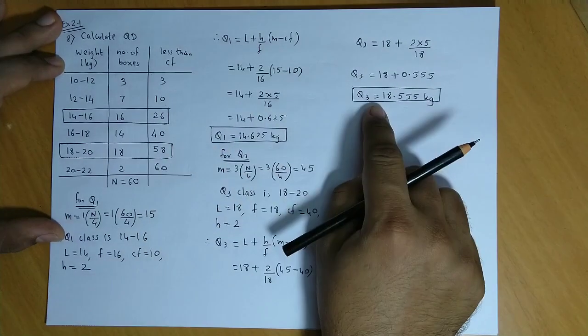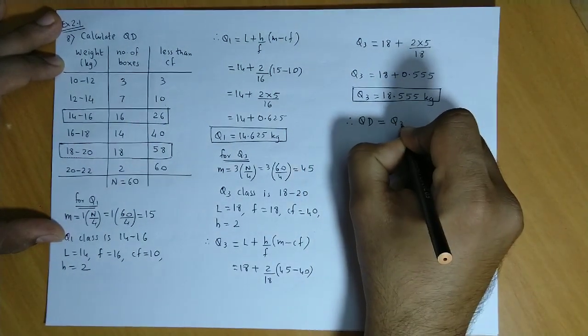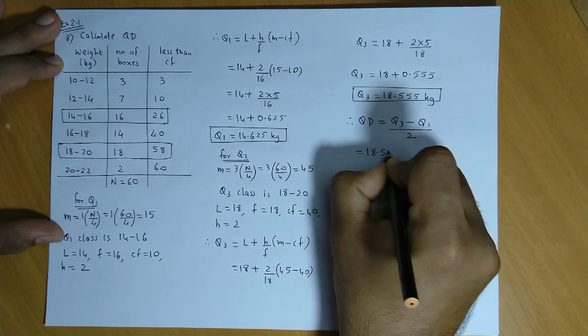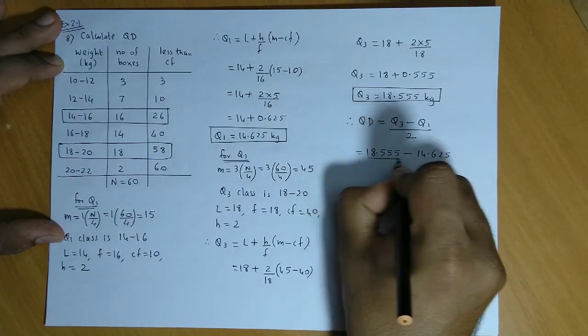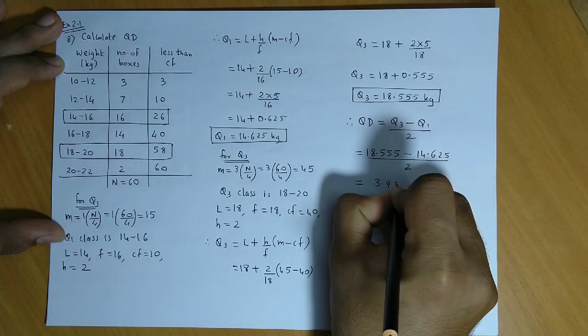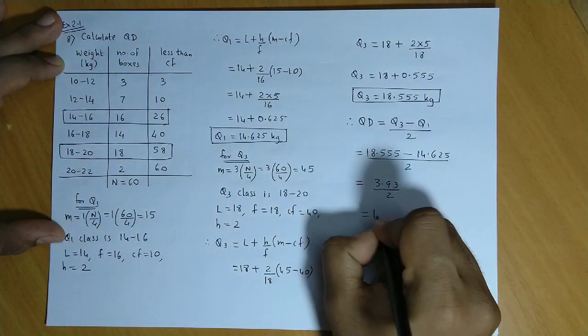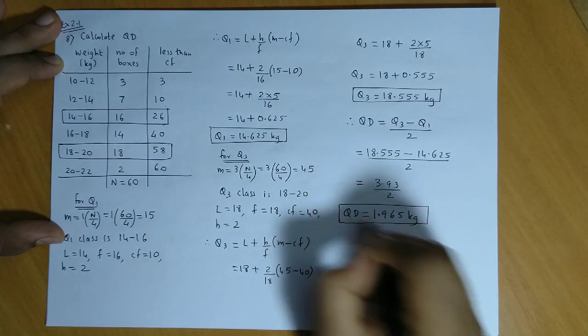We have obtained Q1 and Q3. We can easily calculate QD. QD is given by Q3 minus Q1 divided by 2. Q3 is 18.555, Q1 is 14.625 divided by 2. 18.555 minus 14.625 gives 3.93. Divided by 2, we get 1.965 kg. This is the value for the quartile deviation.